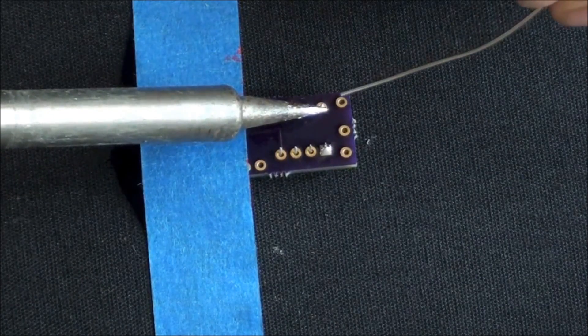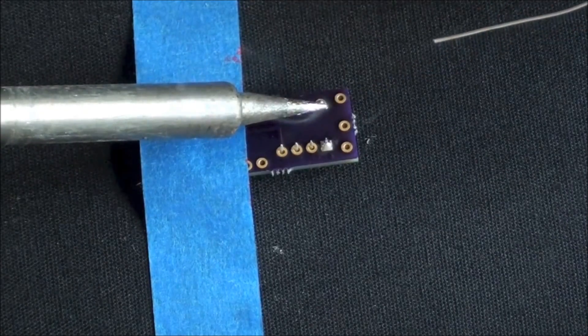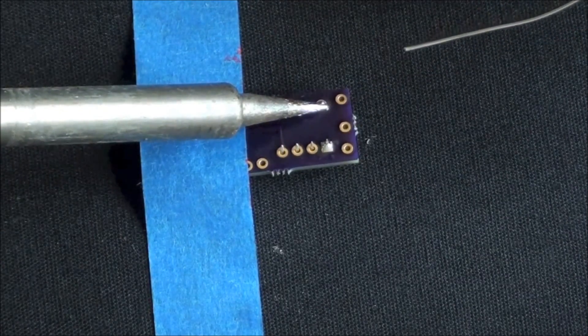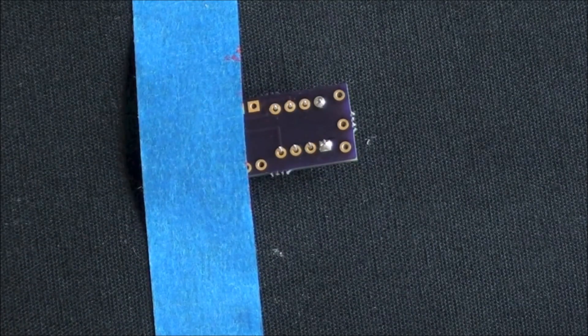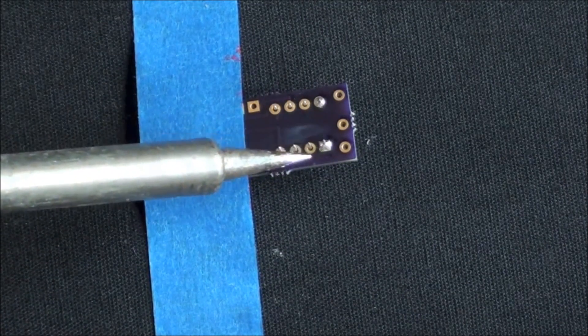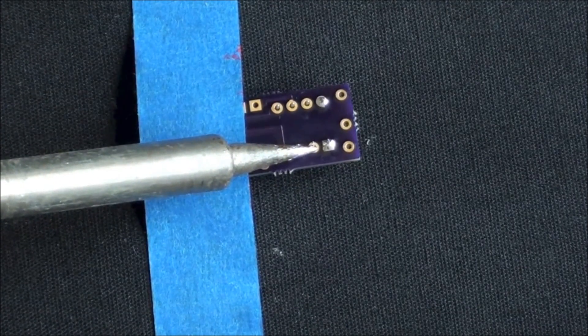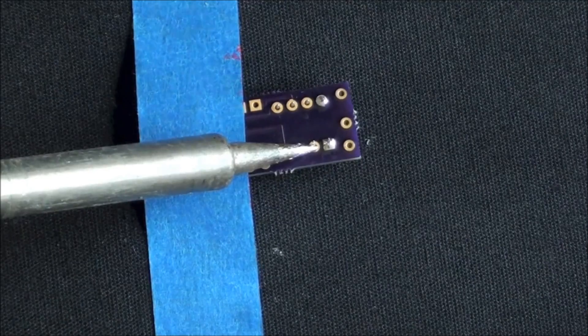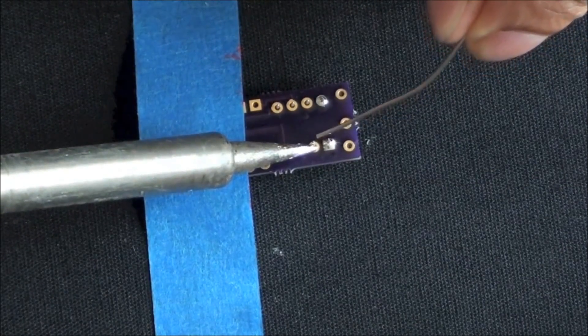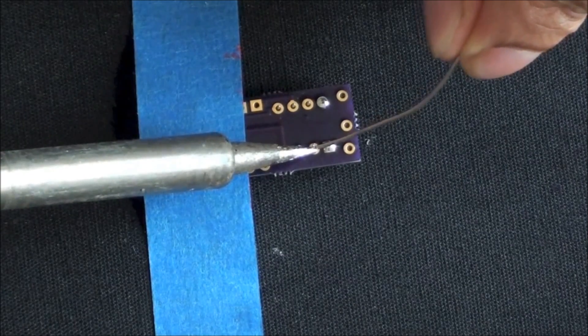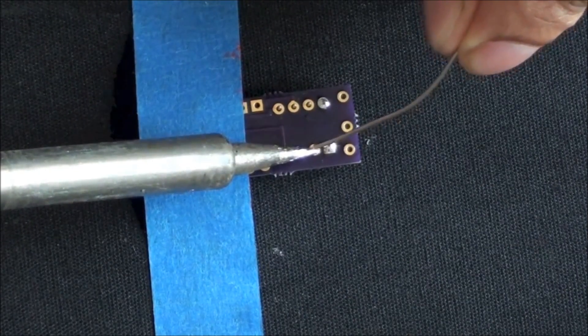We will do this again for the other pins until all pins are done. The other pins are just as easy to complete. Just follow the same process for the pins, being careful not to accidentally form a bridge between two pins. Soldering two pins together will cause the microcontroller not to work.